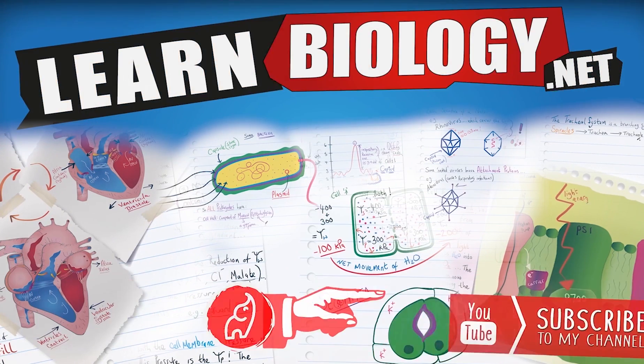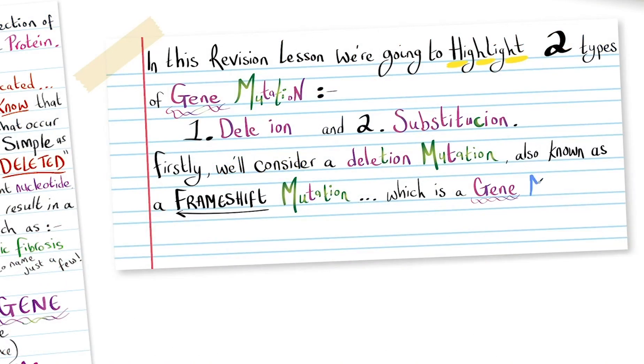A deletion mutation, also known as a frameshift mutation, is a gene mutation where a single nucleotide, a base, is deleted.